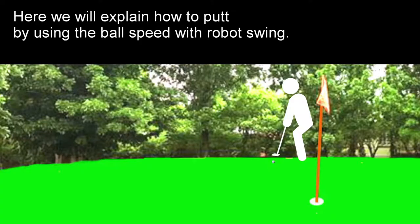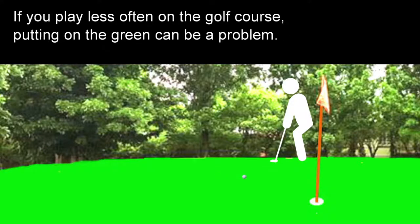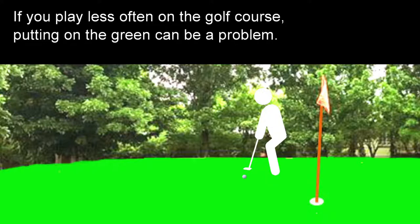Here we will explain how to putt by using the ball speed with robot swing. If you play less often on the golf course, putting on the green can be a problem.